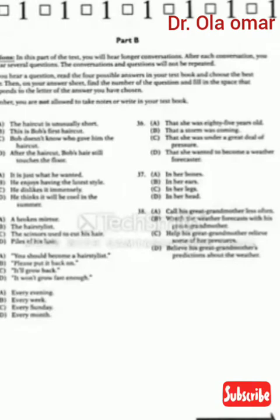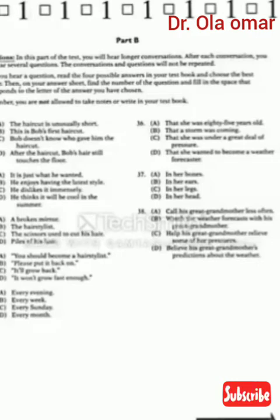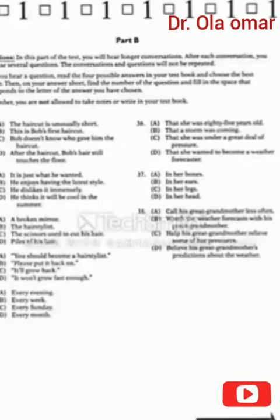Part B, page 518. Directions. In this part of the test, you will hear longer conversations. After each conversation, you will hear several questions. The conversations and questions will not be repeated. After you hear a question, read the four possible answers in your test book and choose the best answer. Then, on your answer sheet, find the number of the question and fill in the space that corresponds to the letter of the answer you have chosen. Remember, you are not allowed to take notes or write in your test book.